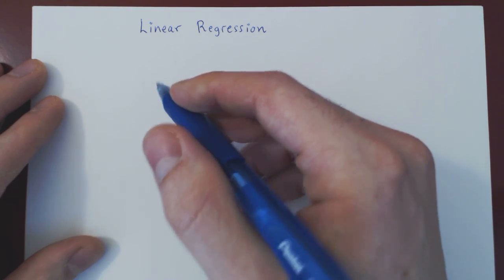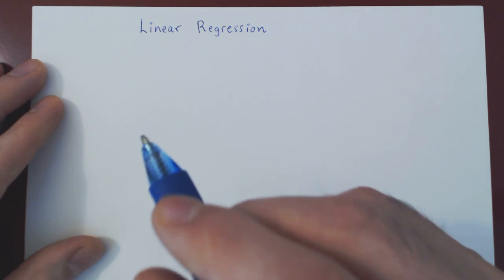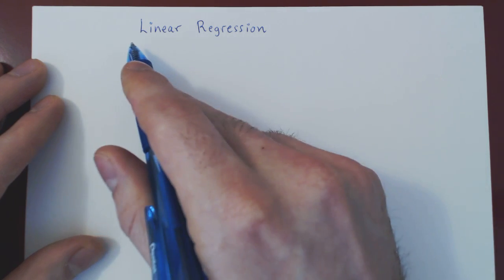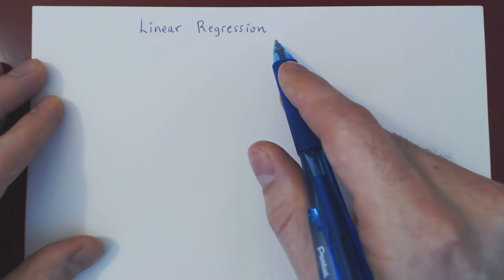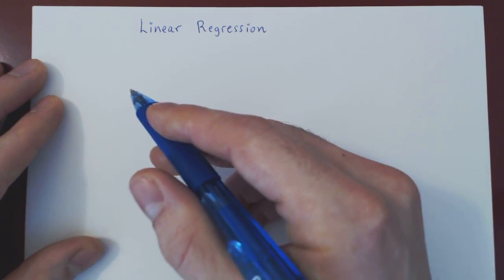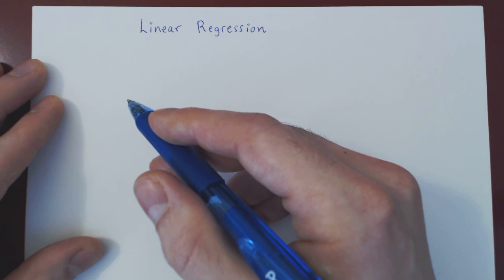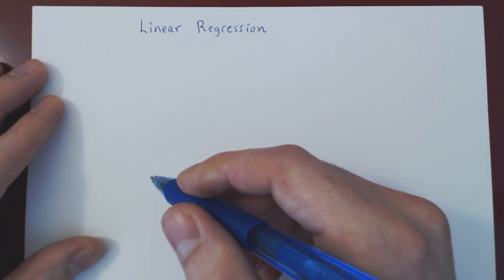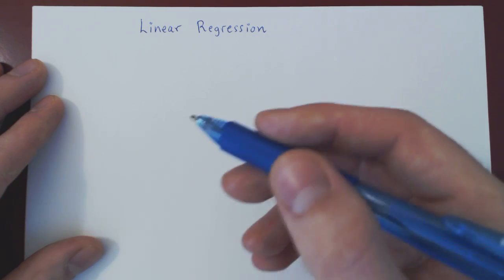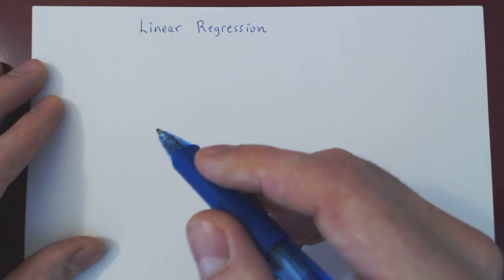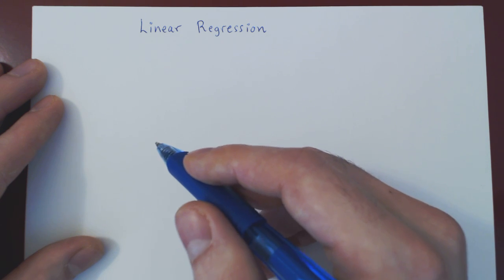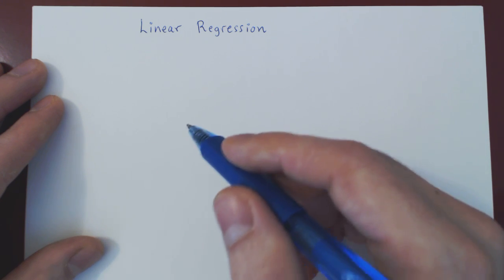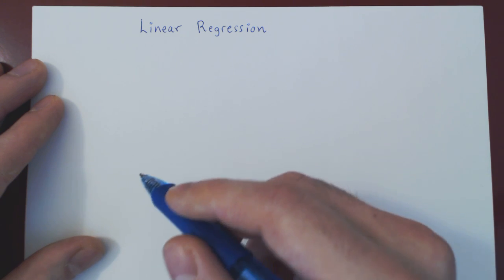In this video, we will briefly introduce the basic ideas of linear regression. The question is: given two variables, say x and y, does there exist a linear relationship between those two variables?